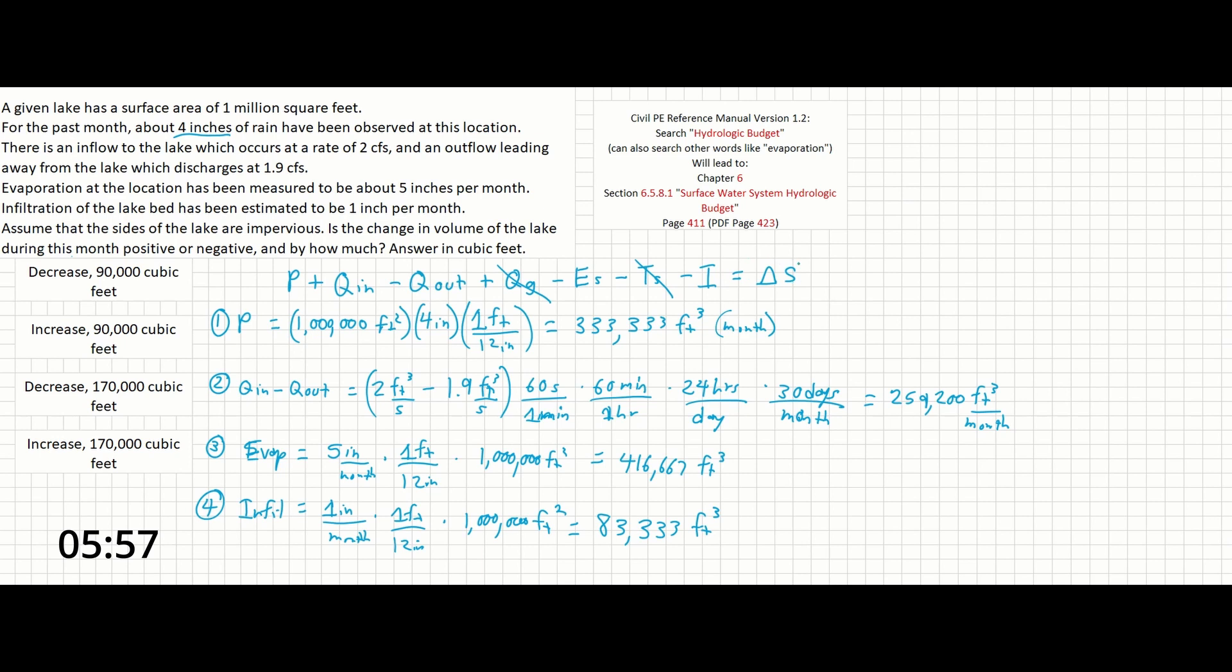So now we need to find the delta in the storage. Is the lake getting more water over the course of the month, or is it losing water? Which of these variables would we want to add, and which of these would we want to subtract?